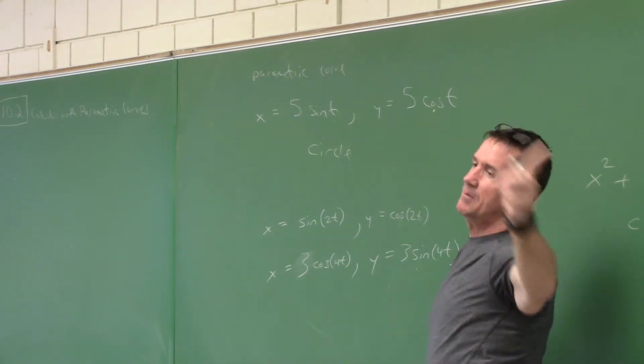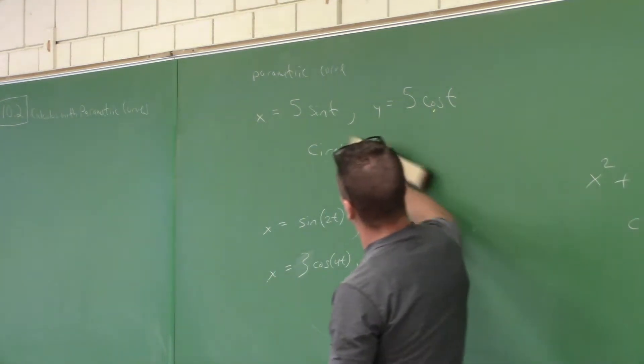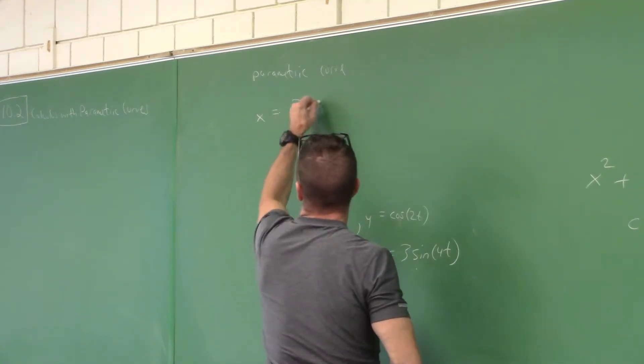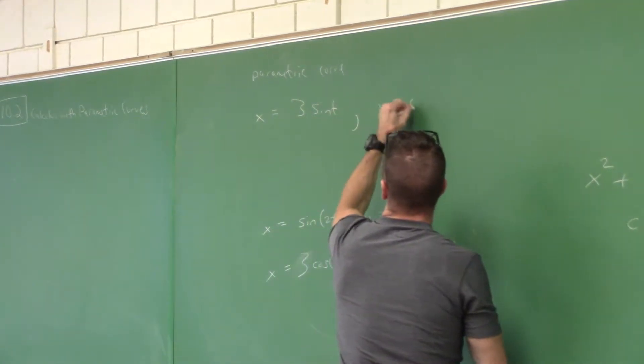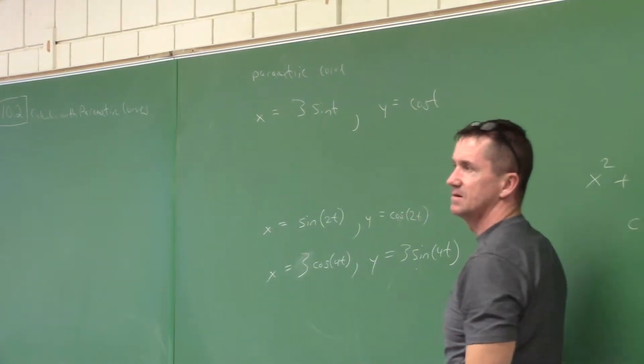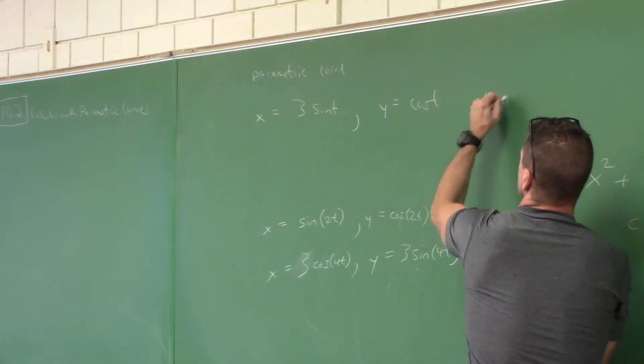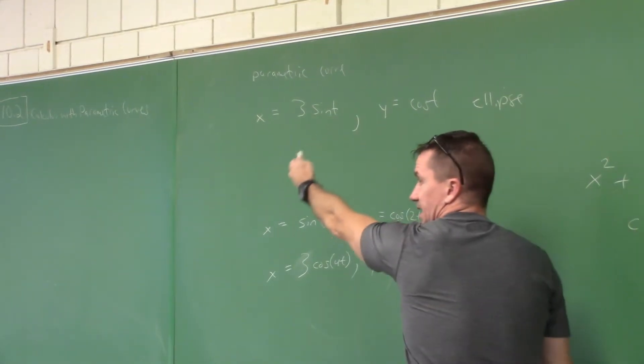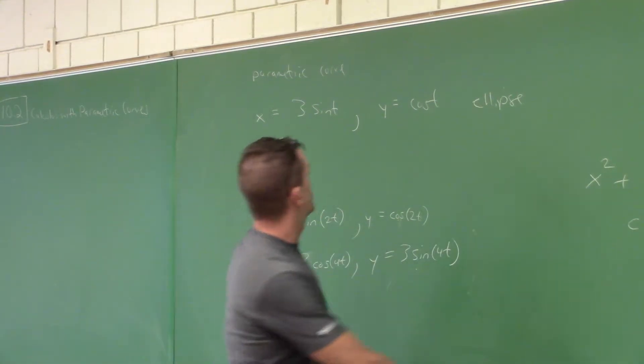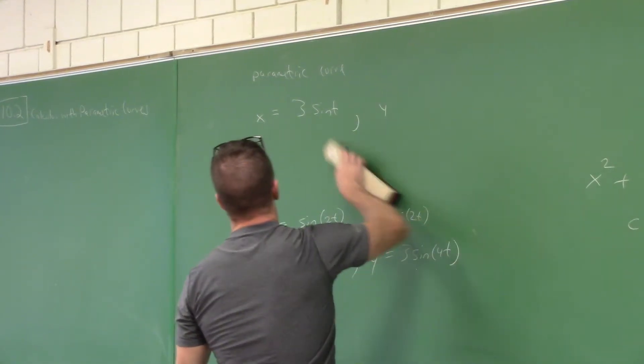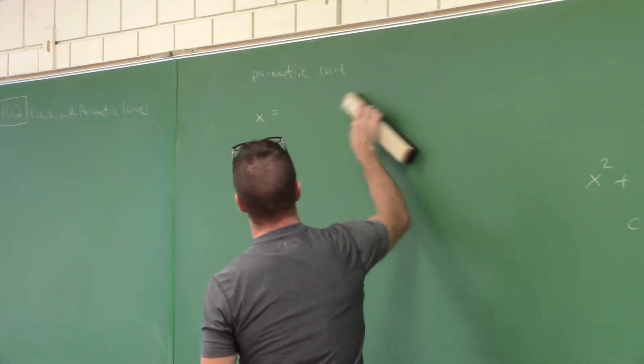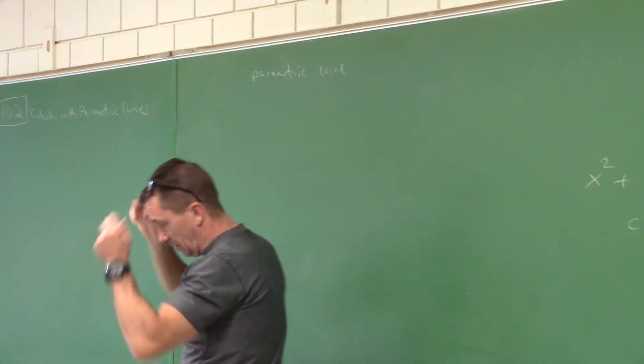But I'll go back to the problem we did last class. We had something like three sine t and, was that it? That wasn't a circle, what was it? That made the ellipse. So you see the difference? What if one has a three, one has a one, now you have an ellipse. And then anything else, you're just plotting a curve. When it comes to x equals t plus one, and y is t squared plus two. One more of these.